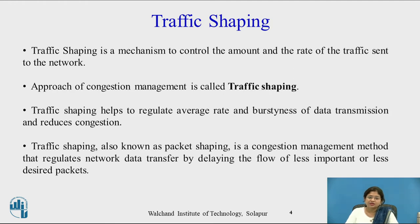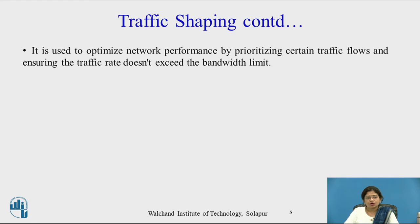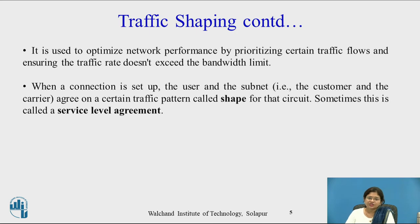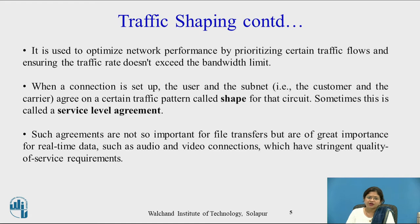Traffic shaping is also known as packet shaping. It is a congestion mechanism method that regulates network data transfer by delaying the flow of less important or less desired packets. It is used to optimize network performance by prioritizing certain traffic flows and ensuring the traffic rate does not exceed the bandwidth limit. When a connection is set up, the user and the subnet agree on a certain traffic pattern — called a shape for that circuit — which is sometimes also called a service level agreement. These agreements are not so important for file transfer, but are of great importance for real-time data such as audio and video connections, which have stringent quality of service requirements.